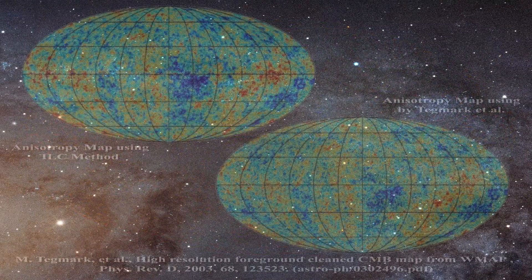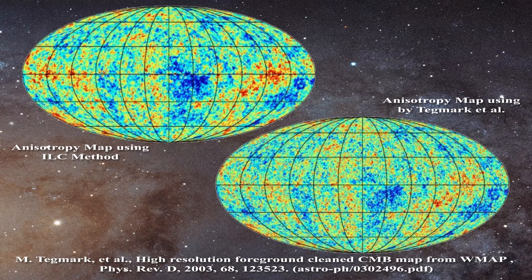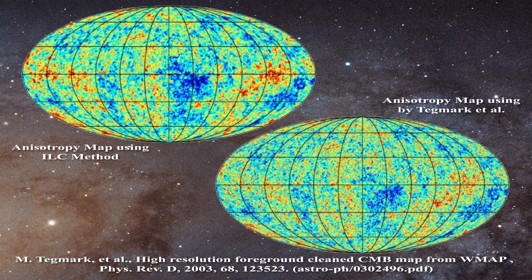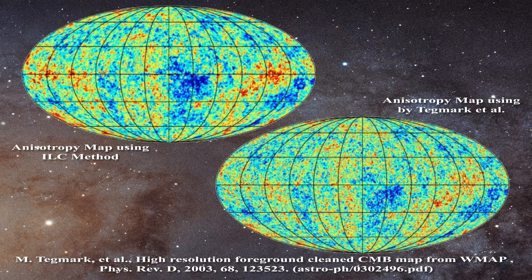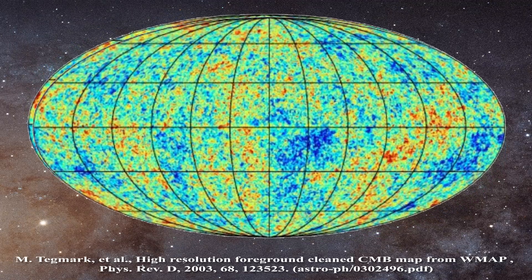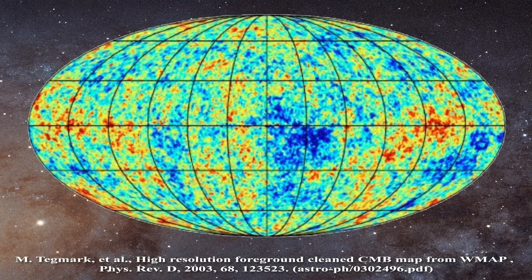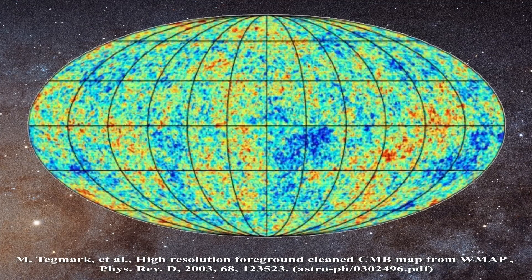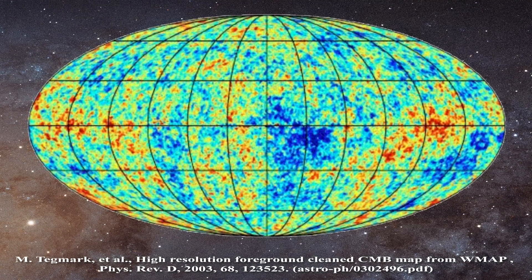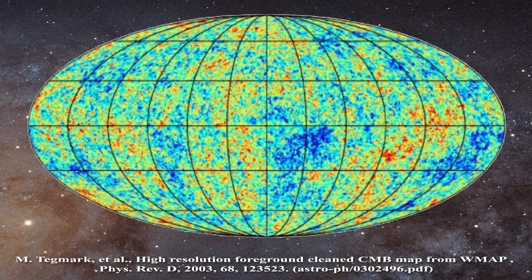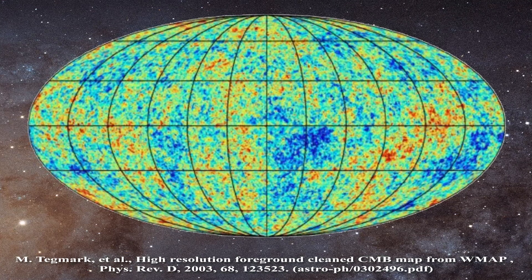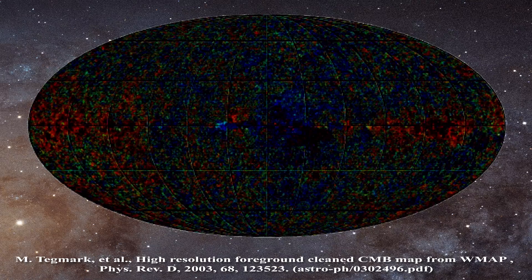We can also subtract the map obtained using the maximum entropy method from the map obtained using the internal linear combination approach. That should give us a completely black image if the maps were identical, but clearly there is a great deal of remaining residual signal. Simply put, these maps are completely different from one another. Beyond the WMAP team, Professor Tegmark's laboratory advanced his own method of removing the foreground, resulting in this map. When you overlap the maps, you can immediately recognize that they are not the same. In fact, they are vastly different, as can be easily ascertained when the WMAP result is subtracted from the map provided by Professor Tegmark.